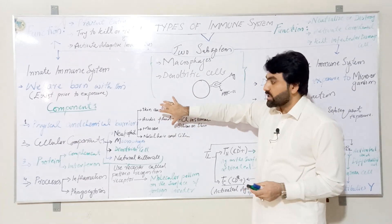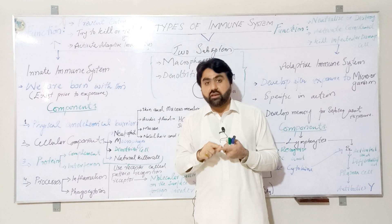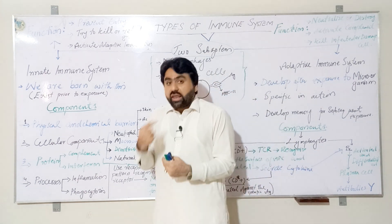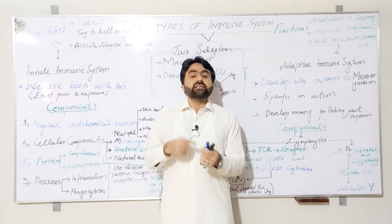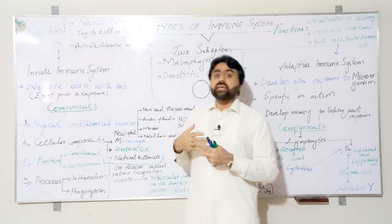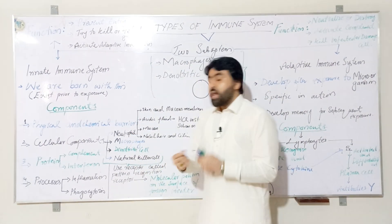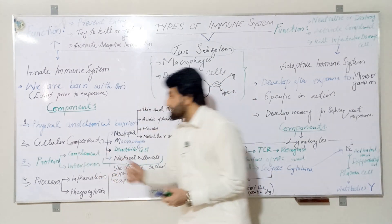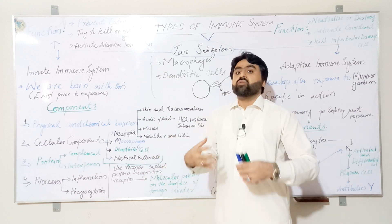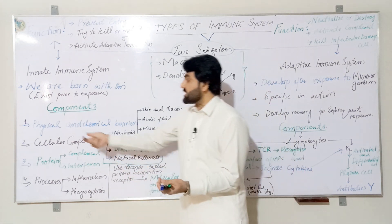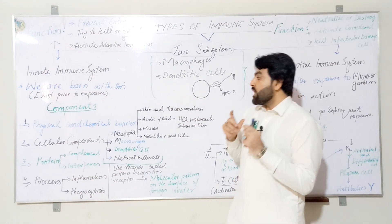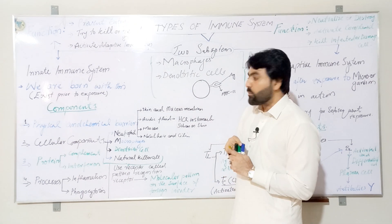These physical and chemical barriers actually prevent the entry of foreign invaders or microorganisms inside the human body. However, if a foreign invader succeeds in crossing this physical and chemical barrier of the innate immune system and gets inside the body, the second component — the cellular component of the innate immune system — comes forward and tries to fight the foreign invader.